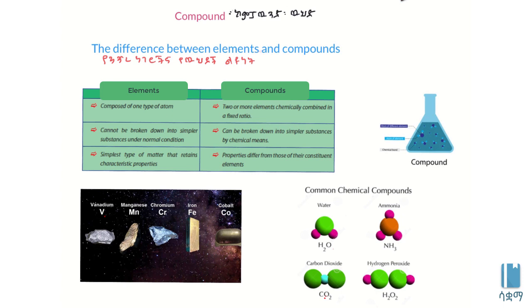Compounds can be separated into their elements through chemical means. For example, carbon dioxide can be broken down into carbon and oxygen. These elements can then be separated.